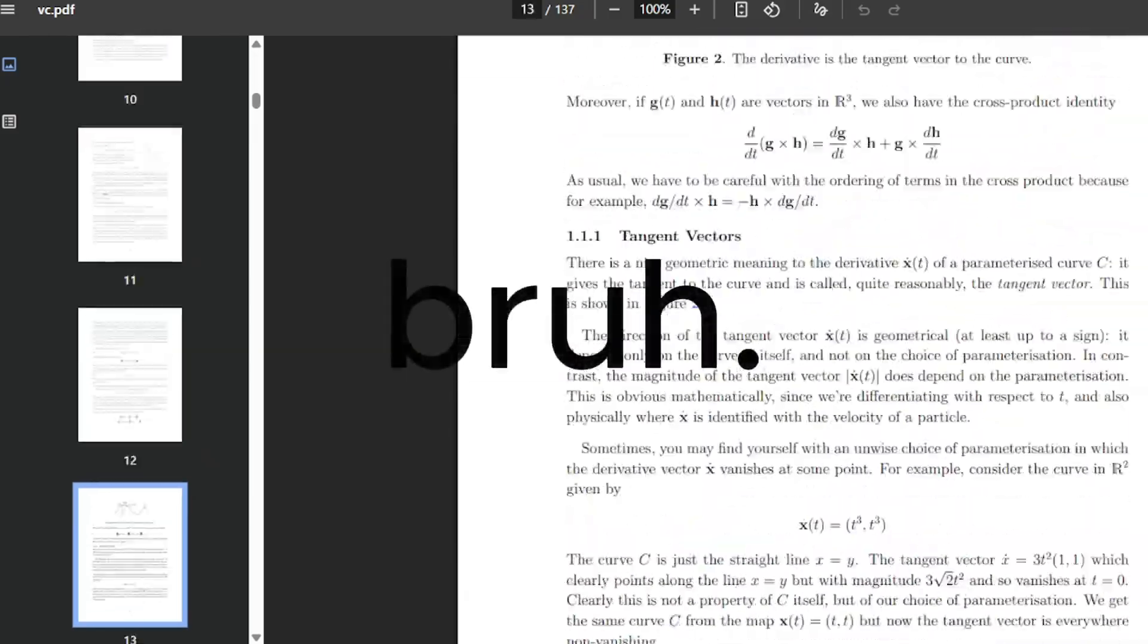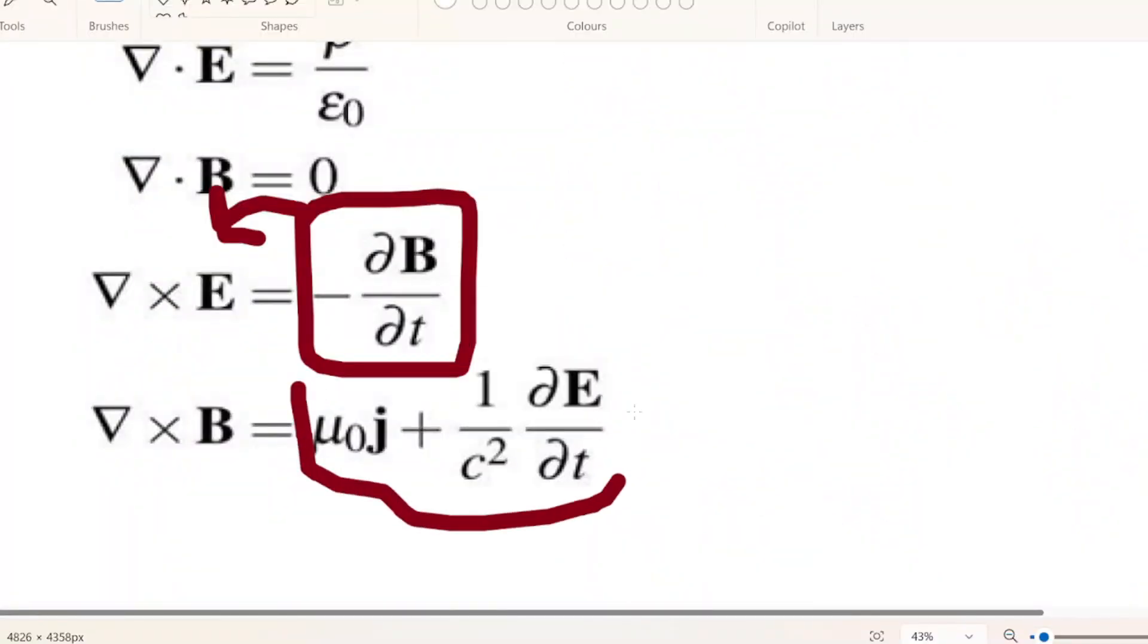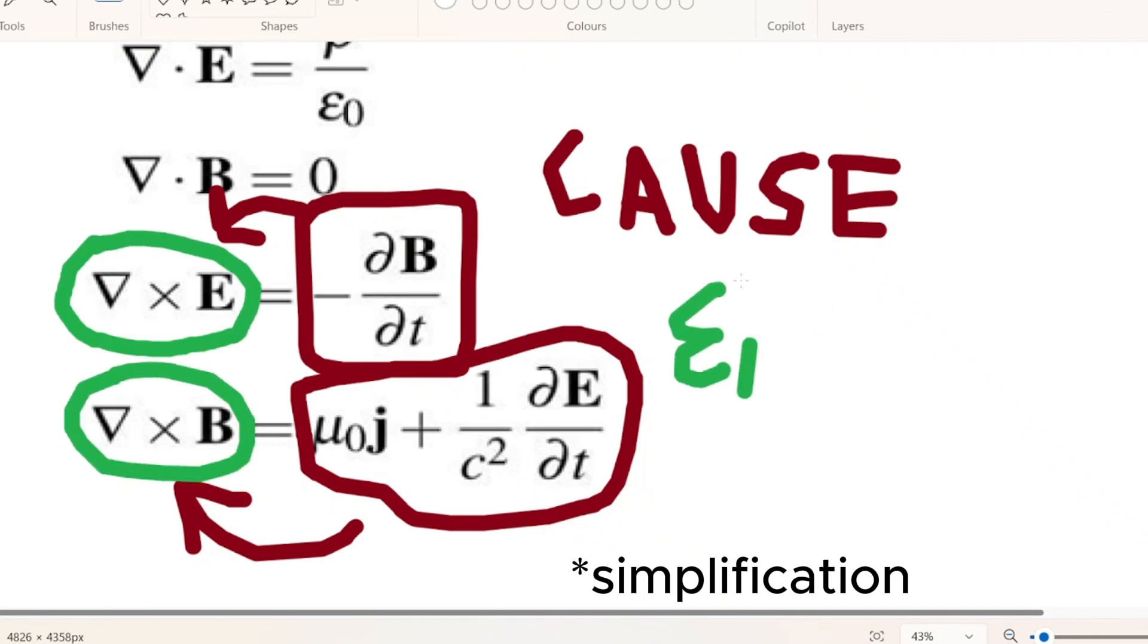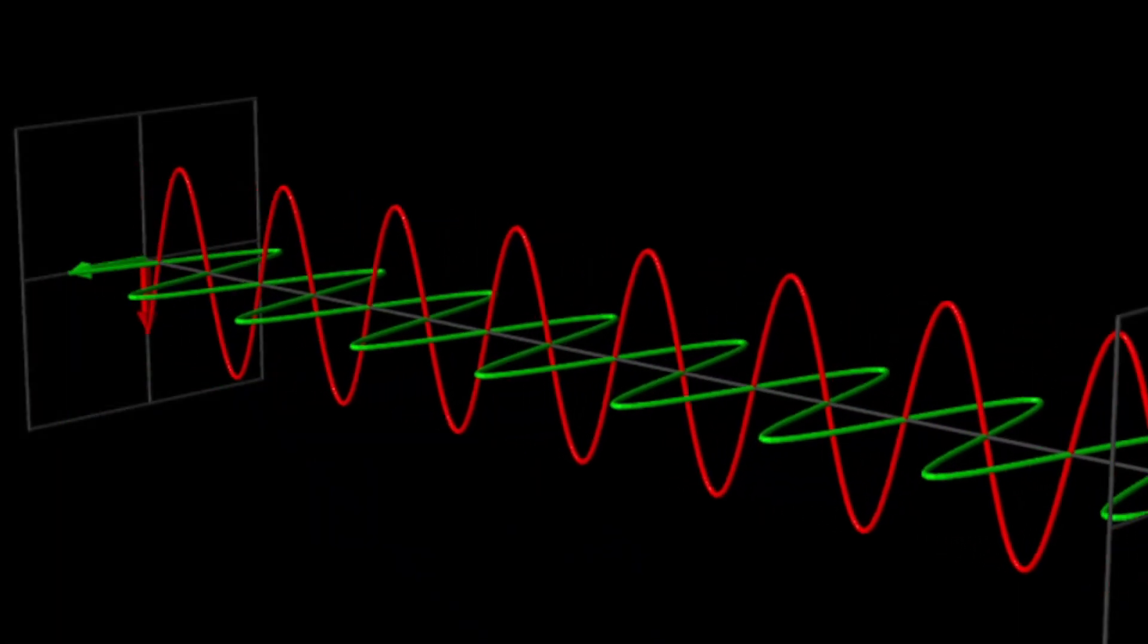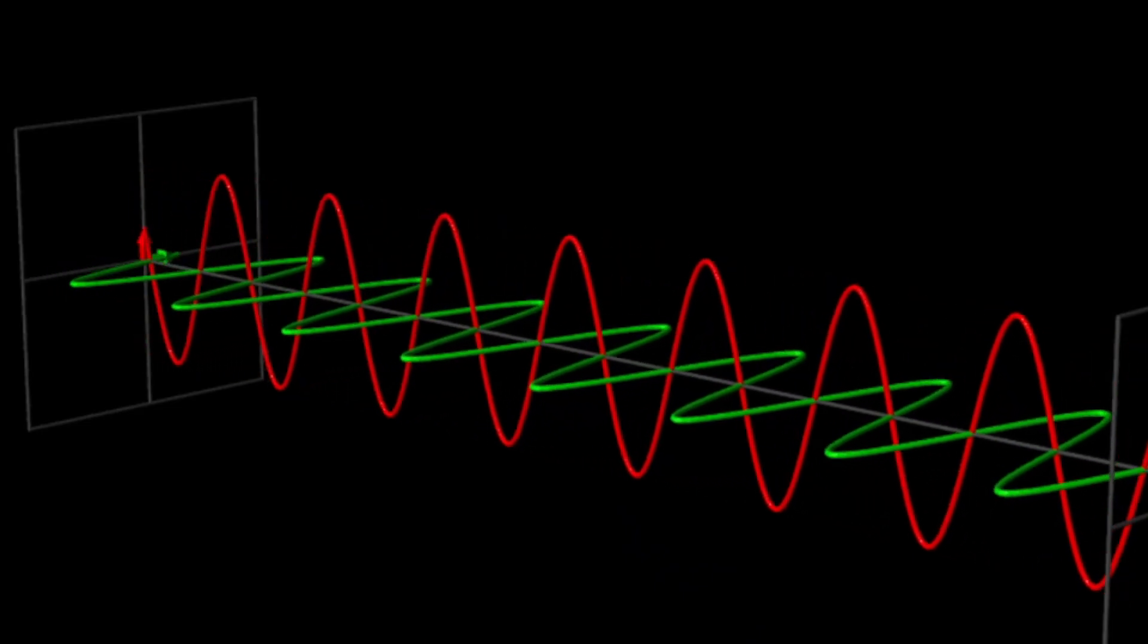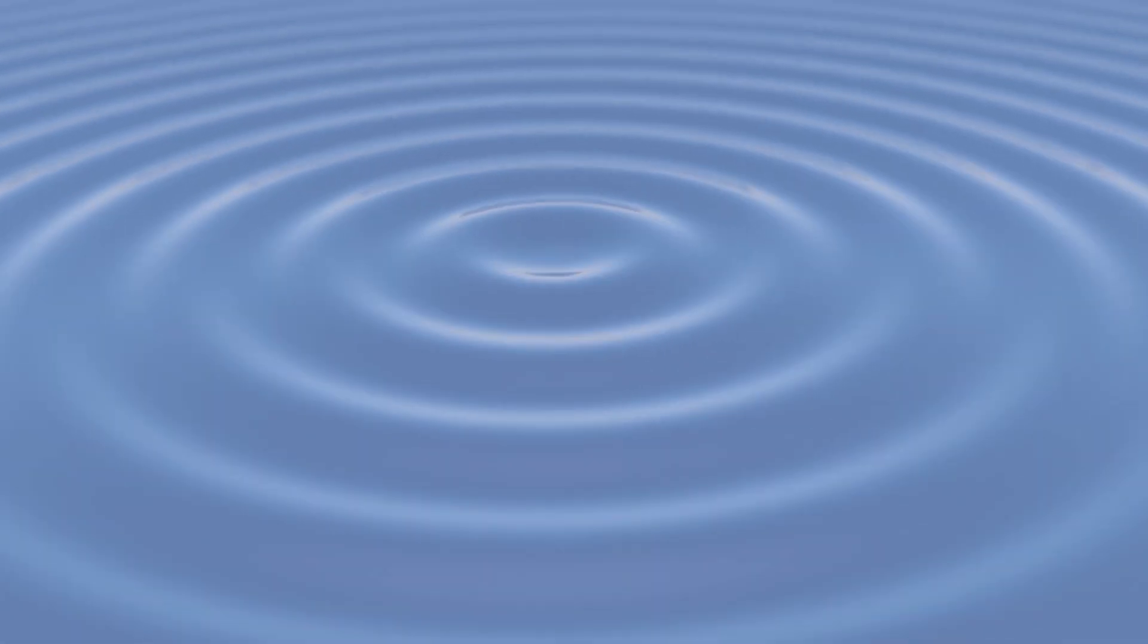But I'll be honest. I haven't fully learned the math behind Maxwell's equations yet. But I do know this. When the electric field changes over time, it creates a curling magnetic field. And when the magnetic field changes over time, it creates a curling electric field. This feedback loop is what lets the fields support each other and move forward through space. And that's what a light wave is, a self-sustaining pattern of electric and magnetic fields.